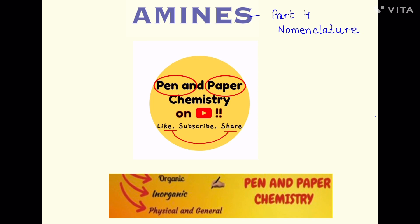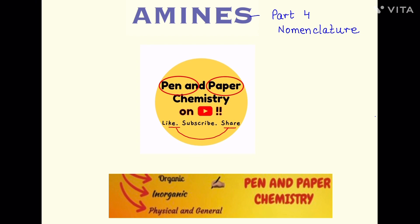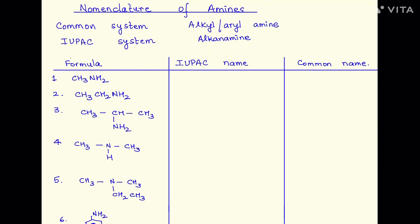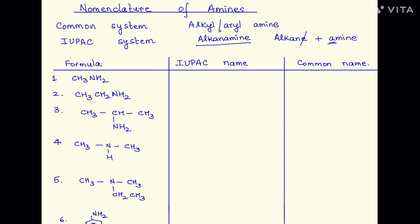Don't forget pen and paper in your hand. Nomenclature of amines can be done in two ways. The common system, where we name amines as alkyl or aryl derivatives — so like ethylamine, methylamine, propylamine and so on. The IUPAC system says that we have to name it as a derivative of the parent alkane. We attach the amine to it, and since 'amine' starts with a vowel, we do away with the E at the end and this becomes alkanamine.